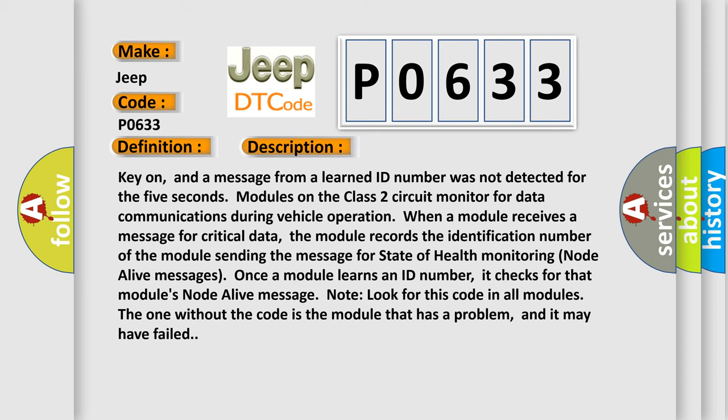Key on, and a message from a learned ID number was not detected for five seconds. Modules on the class 2 circuit monitor for data communications during vehicle operation. When a module receives a message for critical data, the module records the identification number of the module sending the message for state of health monitoring node alive messages. Once a module learns an ID number, it checks for that module's node alive message. Look for this code in all modules. The one without the code is the module that has a problem, and it may have failed.